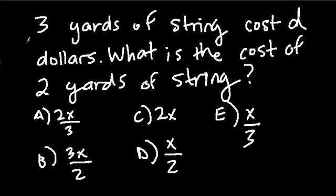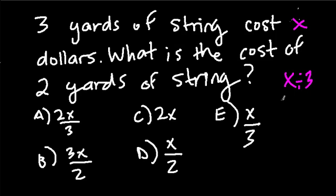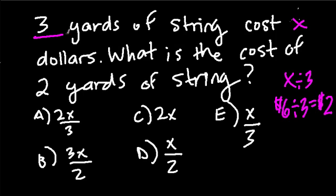Here's another good question, representative of the types you might see on the test. They tell us that 3 yards of string cost X dollars. What is the cost of 2 yards of string? If you knew what the cost of 3 yards of string was, to find 2 yards I would first take the cost X and divide it by 3. So if it was $6 for 3 yards, dividing by 3 tells me every yard is $2. We're taking 3 yards and dividing by 3, which gives us what 1 yard costs.